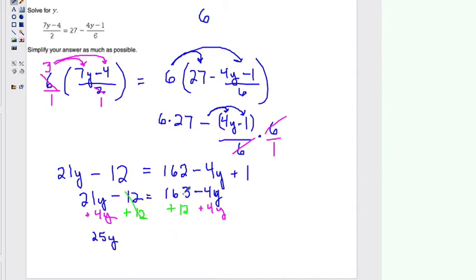So it cancels out here, and this leaves me with 163 plus 12, and that's going to give me 175.